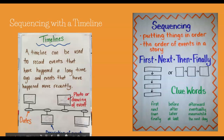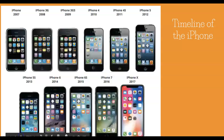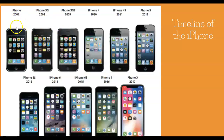I'm going to show you an example of a timeline. Since most of you know what iPhones are, here is a timeline of the iPhones. The first iPhone came out in 2007 and was just called the iPhone. The next one came out in 2008 and was called the iPhone 3G. From there it went year to year — each entry has an image, a name, and a year.